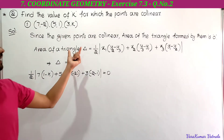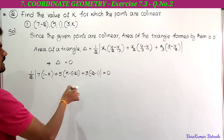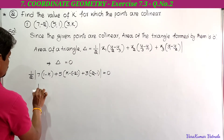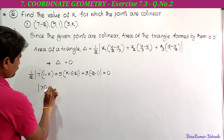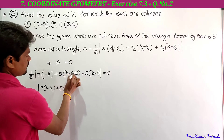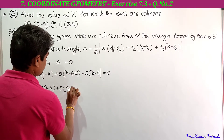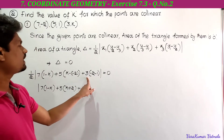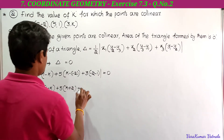Taking 2 to the right side gives 0. So we get: 7 into (1 - k) plus 5 into (k - (-2)), which becomes (k + 2), plus 3 into (-2 - 1), which is -3, giving 3 into -3 equals -9.